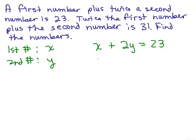Second equation is twice the first number, so 2 times x plus the second number, which is y, is equal to 31. So those are our two equations.